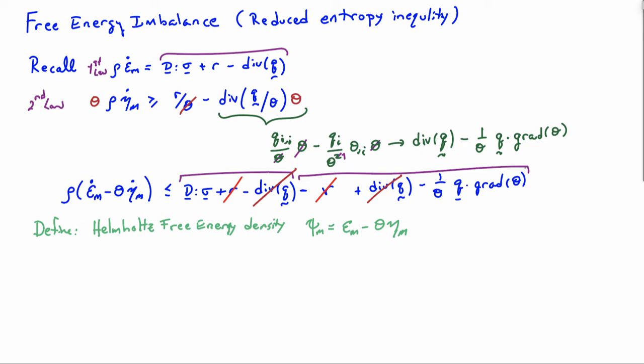And let me go ahead and introduce the Helmholtz free energy. So Psi M. So this is a definition. It's equal to the internal energy density minus the absolute temperature times the entropy density. So that's just a definition. And Psi M is usually called the Helmholtz free energy. Or simply the free energy.